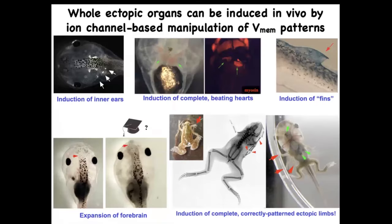When you control these channels and network topology, you can induce whole organs. We can do inner ears, ectopic beating hearts, forebrain — here's where the forebrain normally stops, and we've made this extra-large forebrain. We can make extra limbs — five and six-legged frogs. We can make some structures that don't even belong on this animal, like fins. And there is a whole story about changing the actual shape of an animal to a different species without changing the genome.